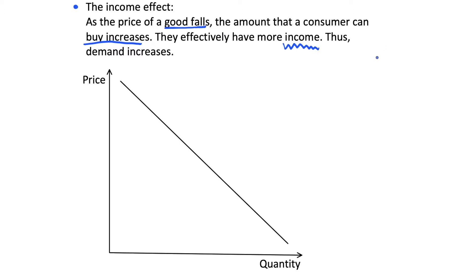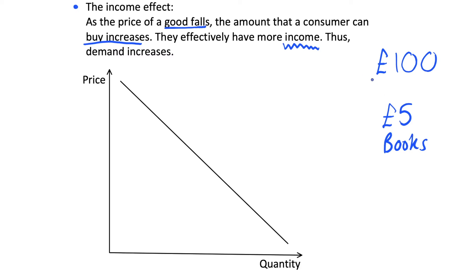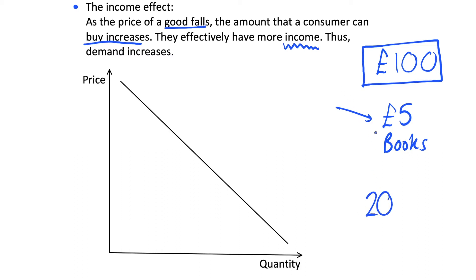As an example, let's consider that a consumer has 100 pounds in their bank account and they are looking to buy books that cost five pounds. For simplicity, let's say they're only going to spend their income on books — they've set aside 100 pounds to purchase books. Clearly here they can buy 20 books for five pounds each, which totals 100 pounds and exhausts their budget. But what if the price of books fell to four pounds?